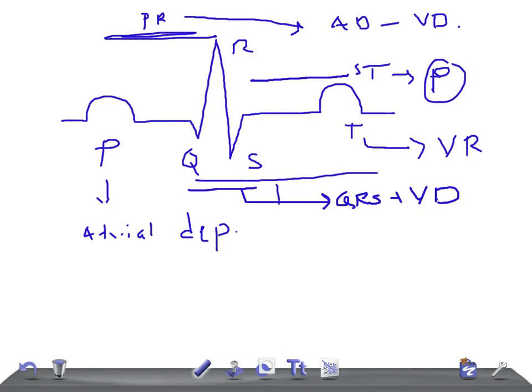The QT interval is the total time taken by ventricular depolarization and ventricular repolarization combined. The QT interval is a very important interval in EKG — it covers the total time from start of ventricular depolarization through repolarization.